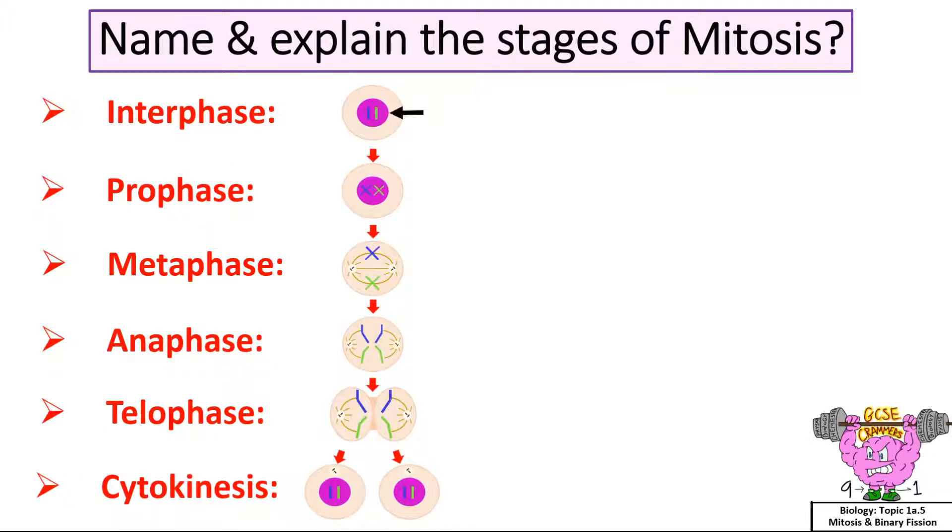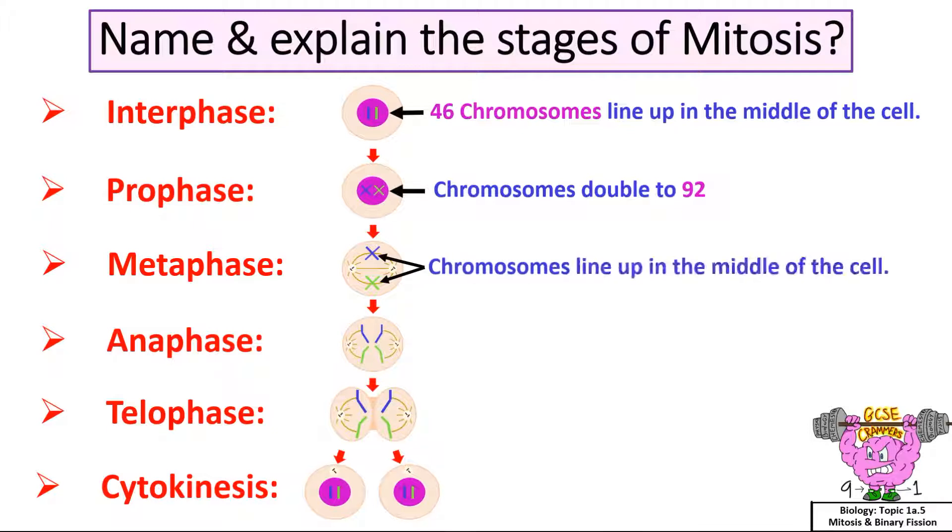During interphase, the cell's 46 chromosomes line up in the middle of the cell. During prophase, the chromosomes double to 92. During metaphase, the chromosomes line up in the middle of the cell. During anaphase, the chromosomes separate and pull apart.